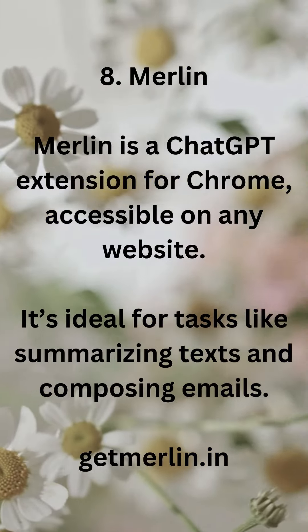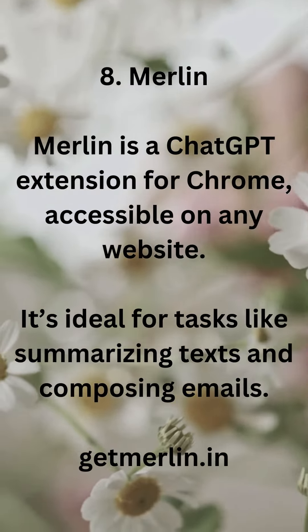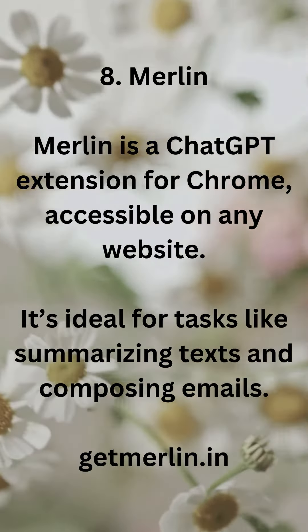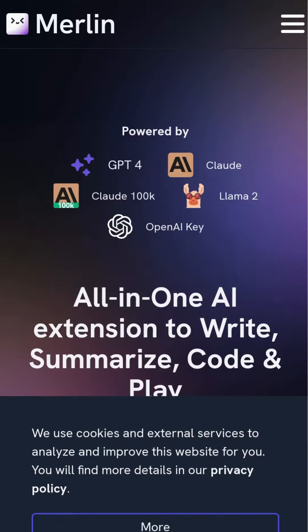8. Merlin. Merlin is a ChatGPT extension for Chrome, accessible on any website. It's ideal for tasks like summarizing texts and composing emails. getmerlin.in